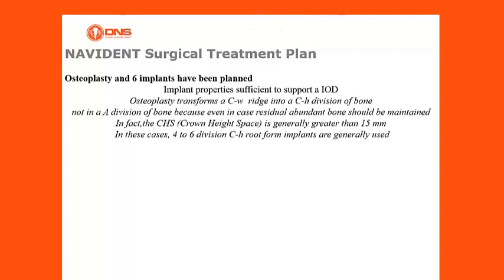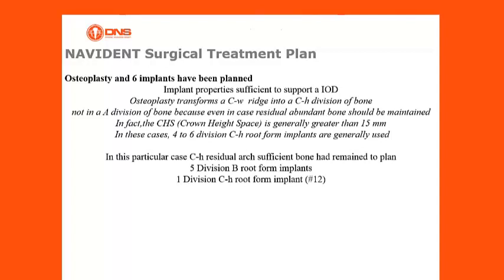In these cases, 4 to 6 division CH root form implants are generally used. In this particular case, the CH residual arch had sufficient bone remaining to plan 5 division B root form implants and 1 division CH root form implant.